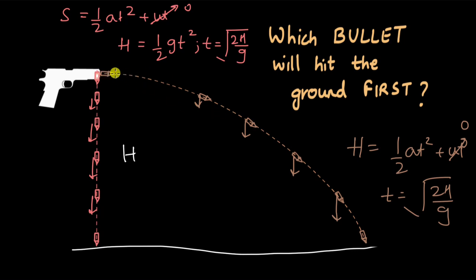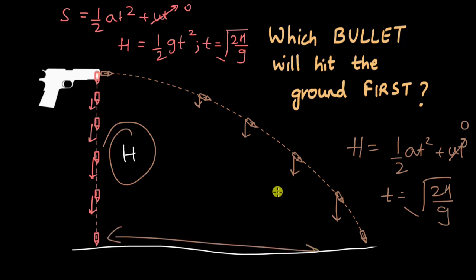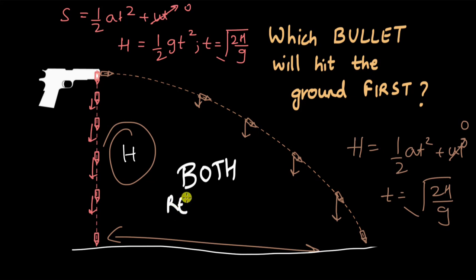It doesn't matter how fast you fire the bullet horizontally — the initial vertical velocity will still be zero. The time it takes to cover height h is only dependent on the vertical velocity, which starts from zero and increases due to g, just like the red bullet. So which bullet hits the ground first? Both reach the ground at the same time.